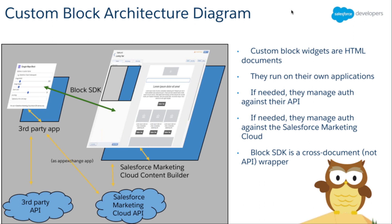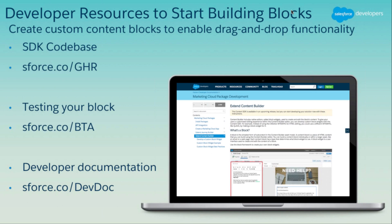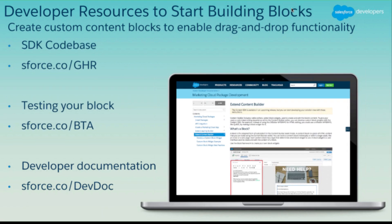There are currently about five methods available, with more coming in subsequent releases to allow more control. We're also providing examples of how to authenticate against the content API if you want your custom block to make selections for images from the content repository in Content Builder. There's a link to the GitHub repo with the SDK codebase, a testing application that lets you test your custom block before deploying it to your account, and developer documentation on the developer help site. Let's jump over to a quick demo and I'll show you some custom blocks in action.